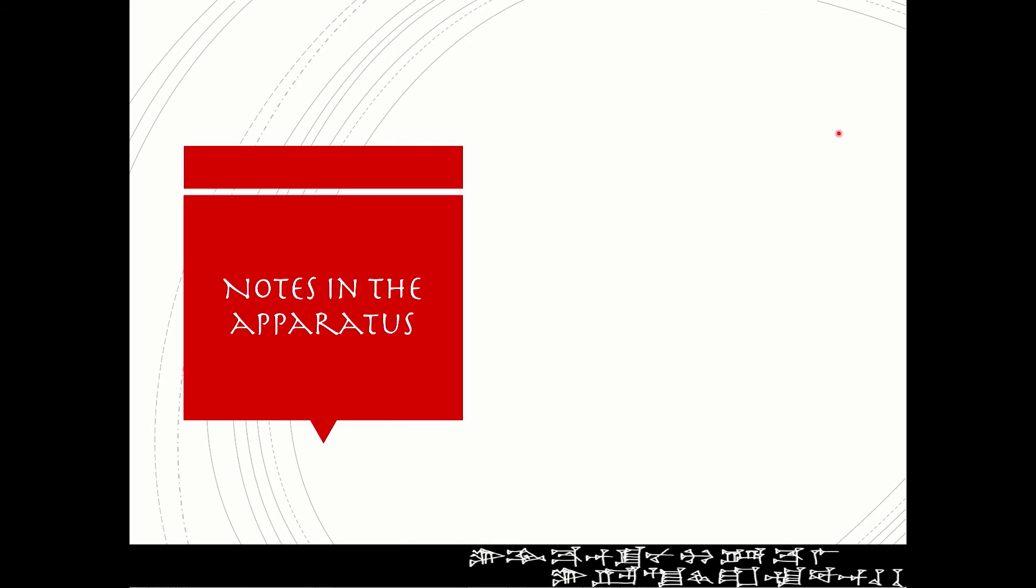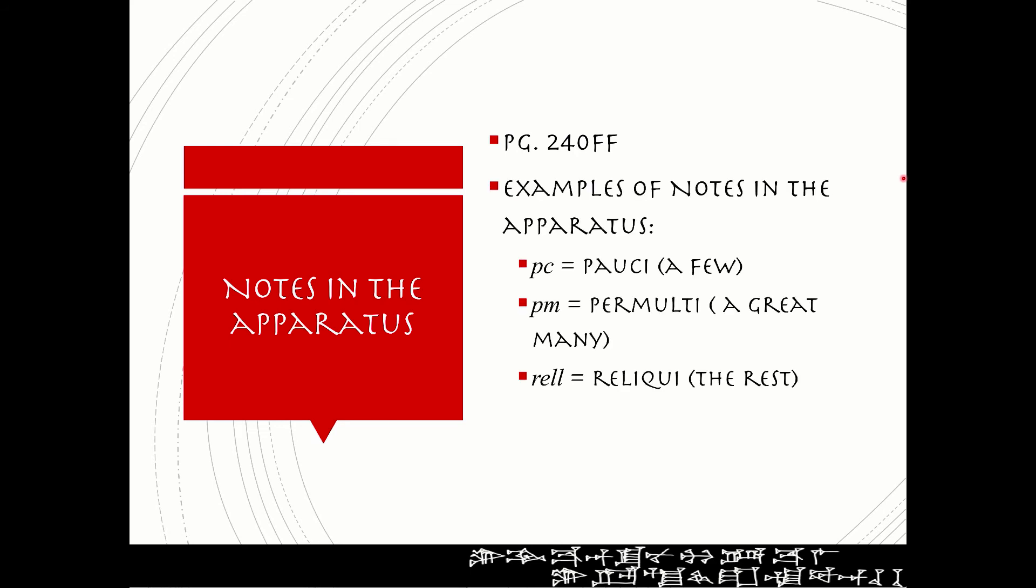So there are many notes in the apparatus itself and they can be confusing. On pages 240 and following, Aland has put a number of explanations for what these notes are. For example, examples of notes that you'll see in the apparatus that he defines in the book in a very user-friendly way. PC, paucity or pausy, a few, these are obviously Latin terms,